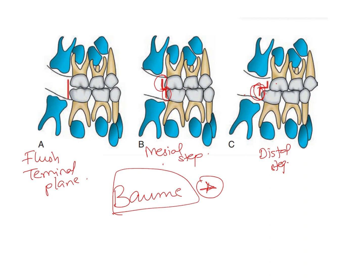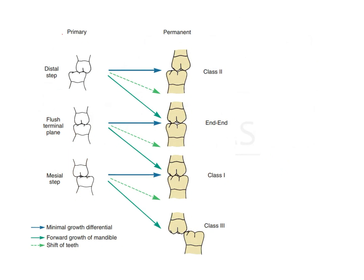This terminal plane relationship helps us predict the kind of molar relationship that will develop in the permanent dentition. If the primary dentition shows a distal step — meaning the lower molars are more distally placed — this indicates that in the permanent dentition, the patient is likely to develop a class 2 molar relationship or an end-on relationship.